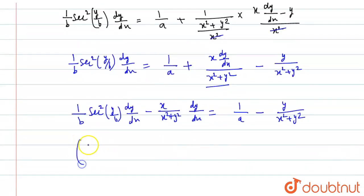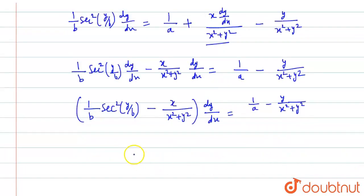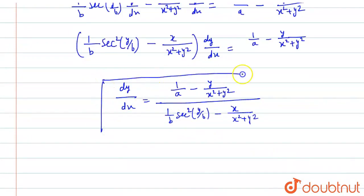Now we take dy/dx common. dy/dx equals [1/a − y/(x² + y²)] divided by [(1/b)·sec²(y/b) − x/(x² + y²)]. This is our final answer — the value of dy/dx. Thank you.